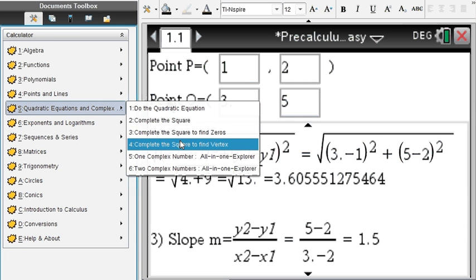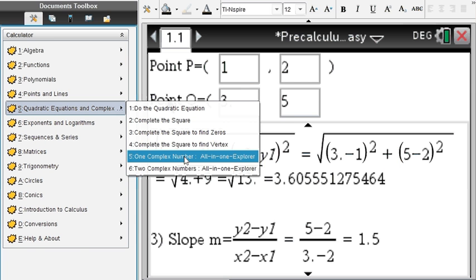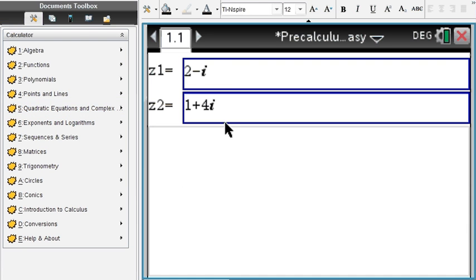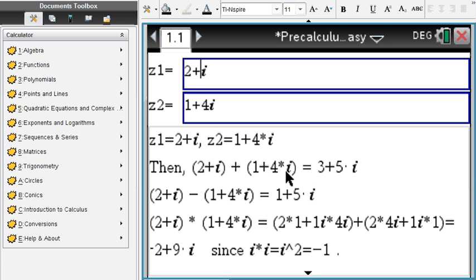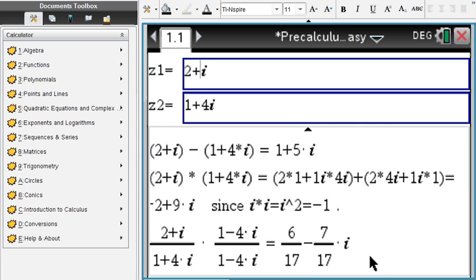You can complete the square to find zeros or the vertex. You can analyze complex numbers and do arithmetic with two complex numbers. Enter your complex numbers, and you get their sum, their difference, and their product, like -2+9i. Remember that i²=-1. If you divide complex numbers, you multiply by the complex conjugate on top and bottom as shown here, and you will arrive at the final complex number.